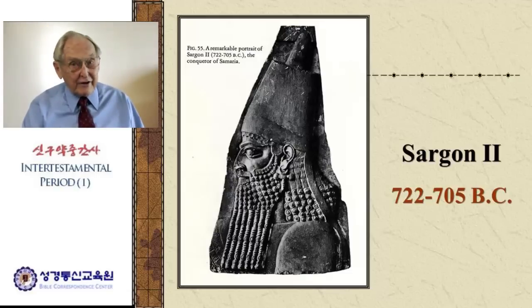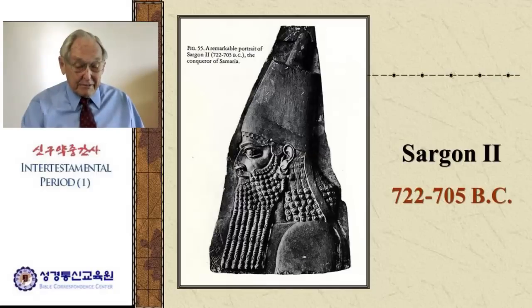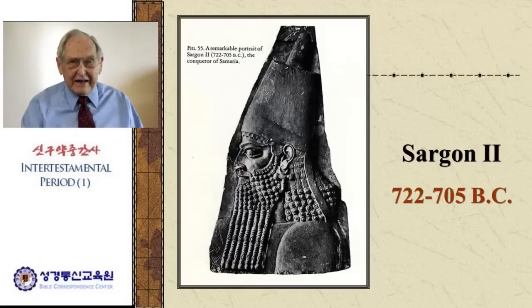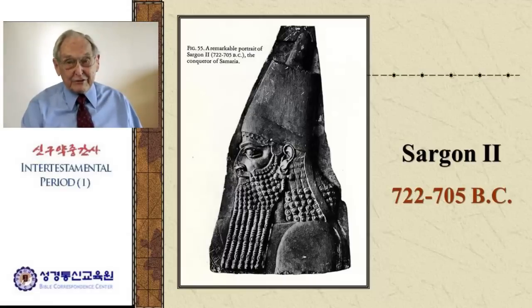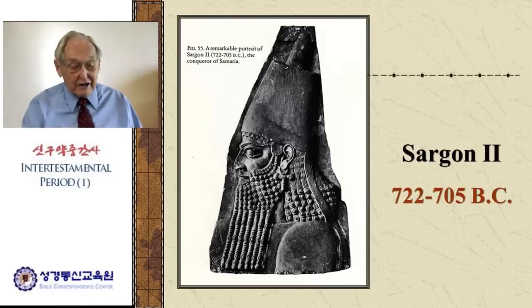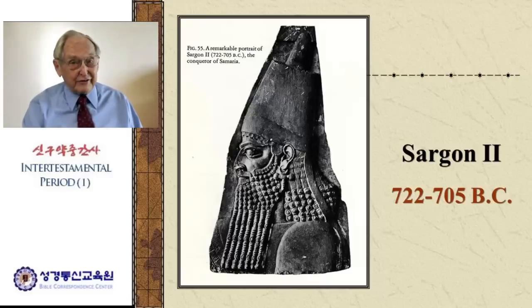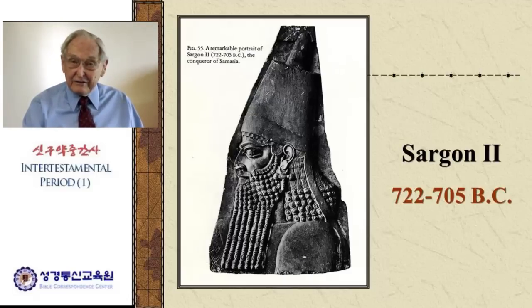A man by the name of Sargon actually concluded that siege. We don't know exactly the details, but it seems that Shalmaneser was either killed or something happened because he is no longer king by the time the final capture of the city of Samaria took place. Sargon II was not known until we read the book of Isaiah, and he's mentioned only one time. But back in the 1800s, there was a great archaeological discovery made — they uncovered the annals of Sargon, a king of Assyria that they never knew existed except that he was mentioned once in the Bible. And now we know a whole lot about this man Sargon, who was one of the great kings of the Assyrian Empire.